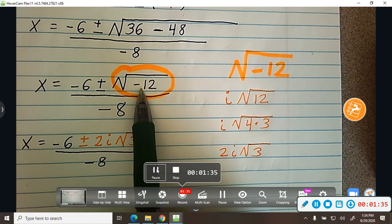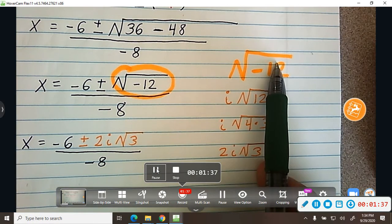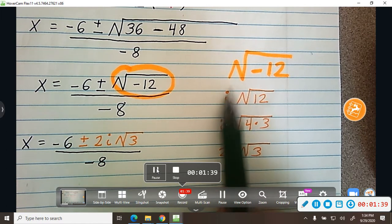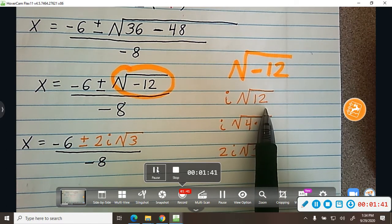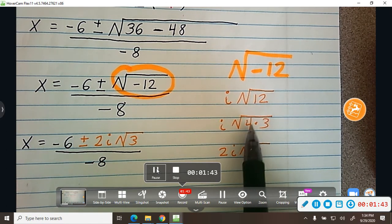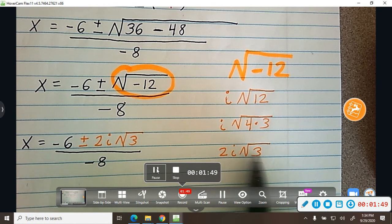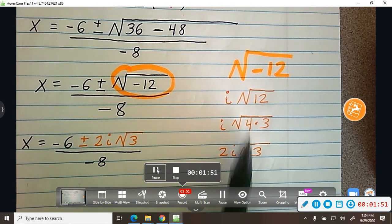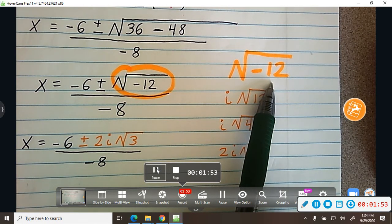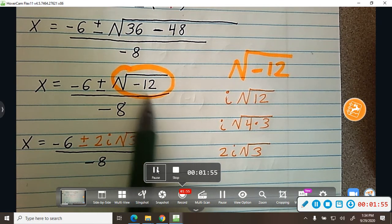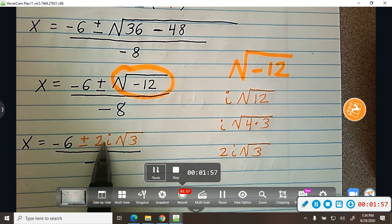So we took the square root of negative 12. We put it here. The negative comes out to make an i. And then we recognize that 12 is 4 times 3, and the square root of 4 is 2. So we got 2i square root of 3, which is the same as square root of negative 12. So instead of putting square root of negative 12, I could put 2i square root of 3.